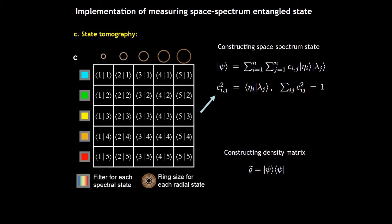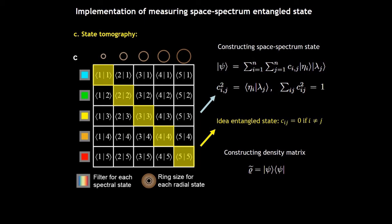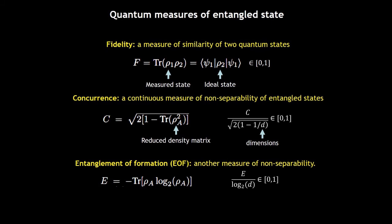The tomography matrix allows us to find each coefficient of the tensor product state. The coefficients are C_ij. For ideal entangled state, the C_ij is non-zero only if i equals j. So that means the space-time entangled state is corresponding to a diagonal tomography matrix.